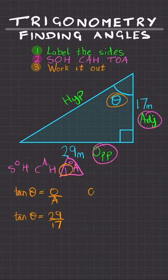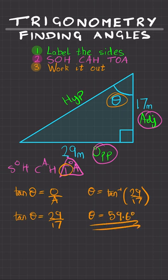Do the inverse of the trig function. So theta will equal tan^(-1) of 29 over 17. Type this into your calculator and you'll get theta equals 59.6 degrees to one decimal place.